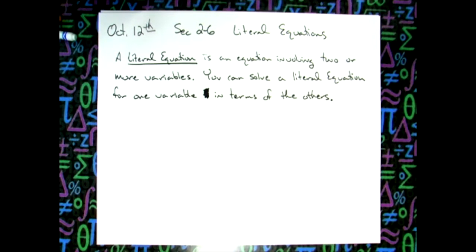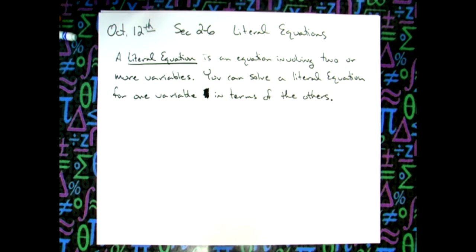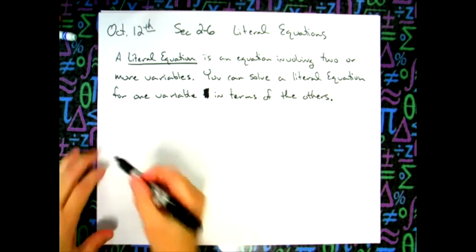Every time you cross the equal sign, you do the opposite. If we see minus four, we add four to both sides. If we see multiplication by two, we divide both sides by two — inverse operations. If you can solve an equation with numbers, you can also solve a literal equation.